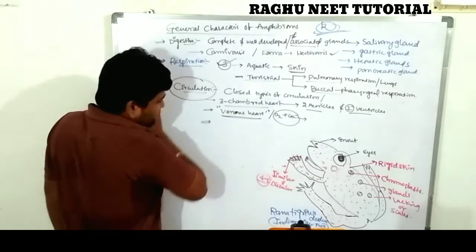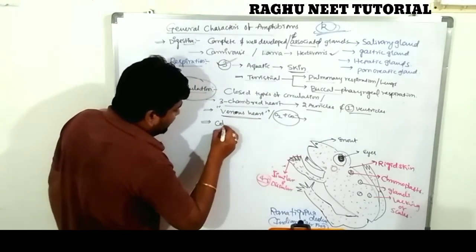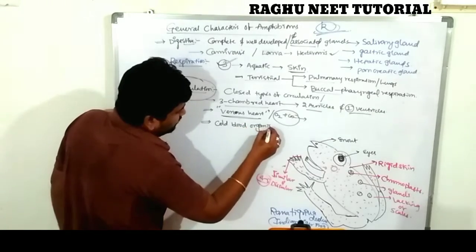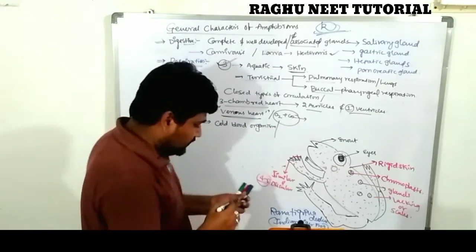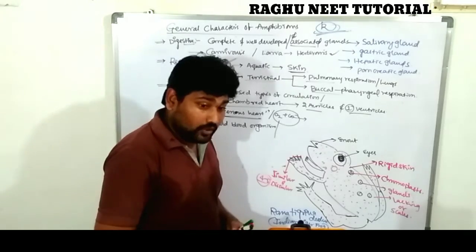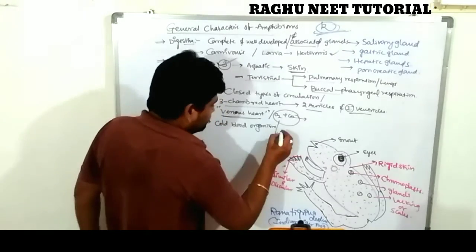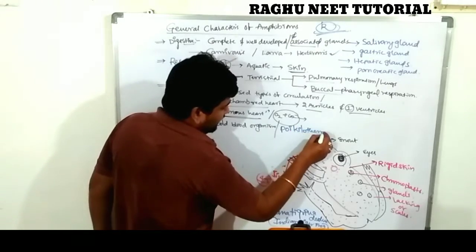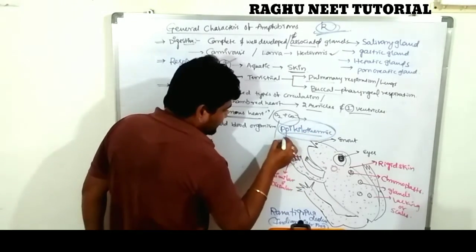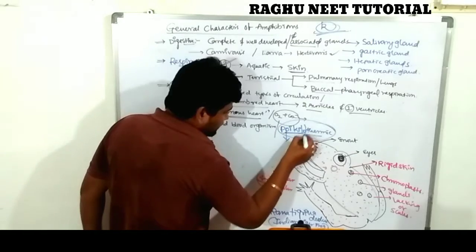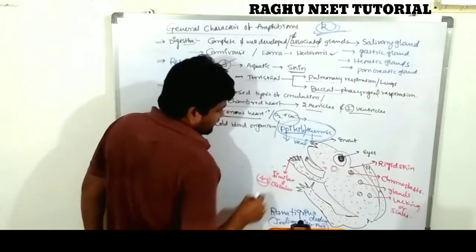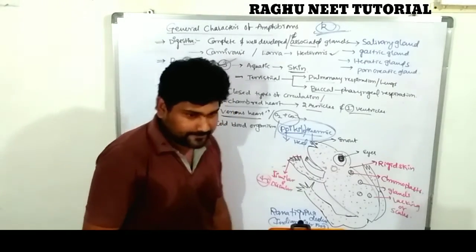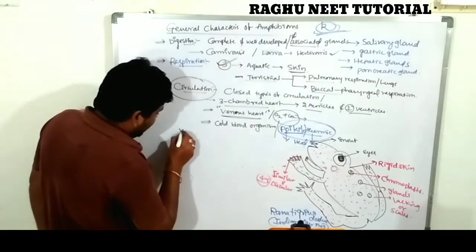All amphibians are cold-blooded organisms — also called poikilothermic. 'Poikilo' means less, and 'thermic' means heat, so they have very less heat in their body. These organisms are therefore called poikilothermic organisms.